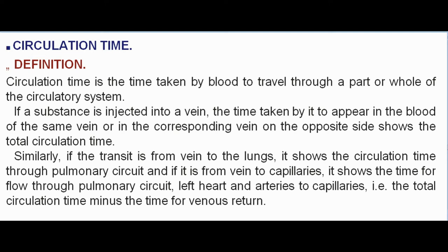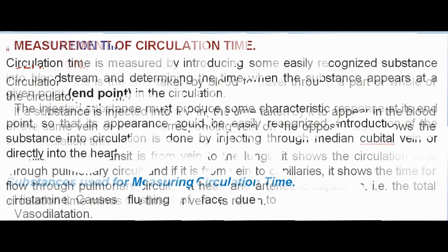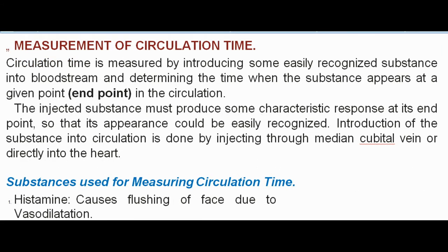Circulation time — definition: Circulation time is the time taken by blood to travel through a part or whole of the circulatory system. If a substance is injected into a vein, the time taken for it to appear in the blood of the same or corresponding vein on the opposite side shows the total circulation time. Transit from vein to lungs shows pulmonary circuit time; from vein to capillaries shows time through pulmonary circuit, left heart, and arteries to capillaries — i.e., total circulation time minus time for venous return. Measurement: Circulation time is measured by introducing an easily recognized substance into the bloodstream and determining the time when it appears at a given endpoint. The substance must produce a characteristic response at its endpoint. Introduction is done via the median cubital vein or directly into the heart.